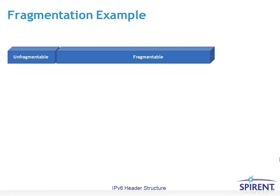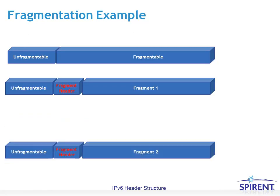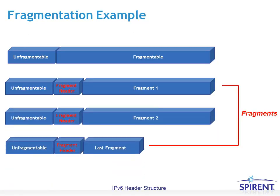As an example of fragmentation, you have the unfragmentable part — the IPv6 header — and then the fragmentable part, which is all the other data following. The fragmentable part can be broken up, the fragment extension header is inserted in between, and using fields such as the ID and the offset it can determine which fragment is which — fragment 1, fragment 2 — and using the flag bit it knows when the last fragment arrives.